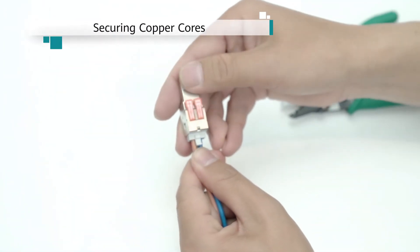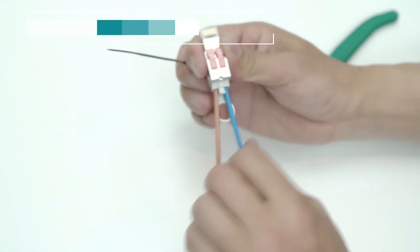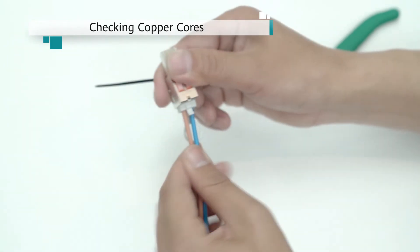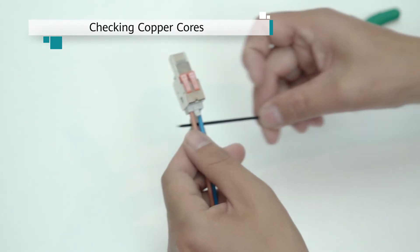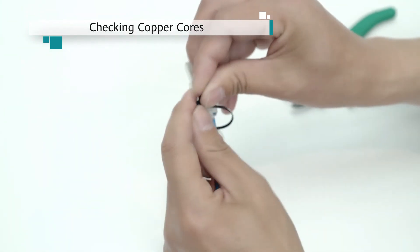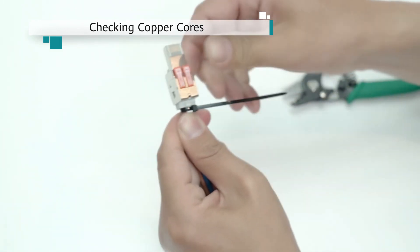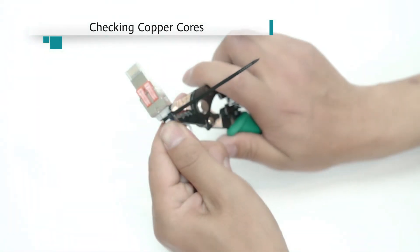Lower the levers and look through the observation windows to verify that the springs do not overlap with the insulation layers. Pull each copper core with a force of about 10 N and ensure that each copper core is properly connected. Bind the copper cores with cable ties in the same direction and cut off the excess cable ties.